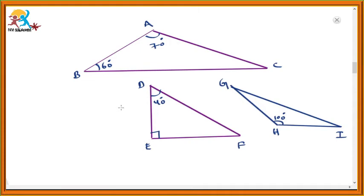Observe these three triangles. The first one is triangle ABC. In this, one angle is 70 degrees, another angle is 60 degrees. Then what will be the third angle? Definitely it will be an acute angle, because the sum of these two angles is 130 degrees, so we require only 50 degrees to reach 180 degrees. So this 50 degrees is called acute. This triangle ABC is called an acute triangle.